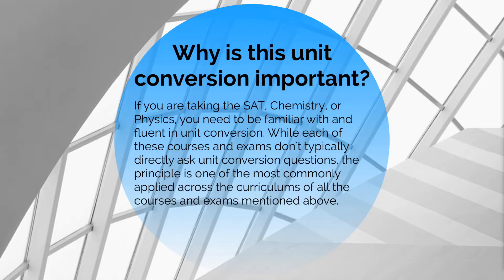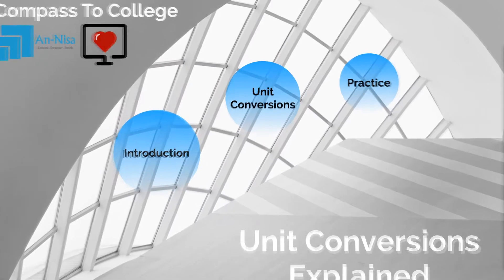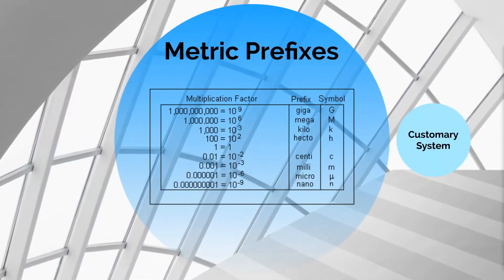Next, we'll briefly go over some of the most important unit conversions you need to know for all these courses. These are the most common metric prefixes. The ones you'll need to know for the SAT are typically kilo, centi, and milli. The important thing to know about the metric system is that they all revolve around powers of 10, so you should know which prefixes are associated with which powers of 10.